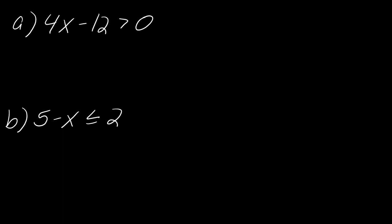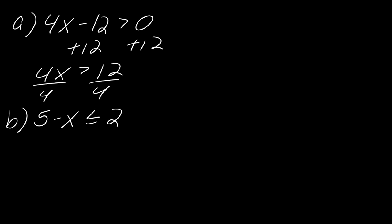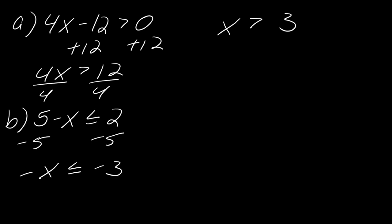Here are two more for practice — pause if you want to try them. For example e: add 12 to each side to get 4x > 12, then divide by 4 (positive), giving x > 3. For example f: subtract 5 from each side to get -x ≤ -3. Multiply or divide by -1 (negative), so flip the inequality: x ≥ 3.